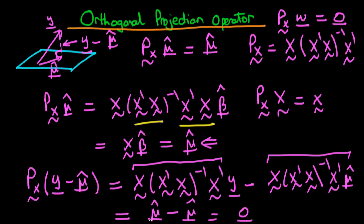In other words, the projection operator operating on a vector which is orthogonal to the column space of X — represented by this particular plane here, where the plane represents the column space of X — gives zero out. So the orthogonal projection operator appears to have the properties which we require of it.